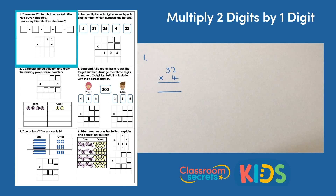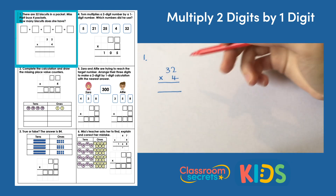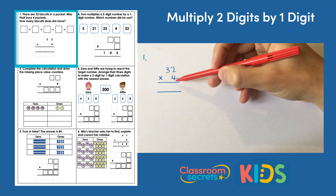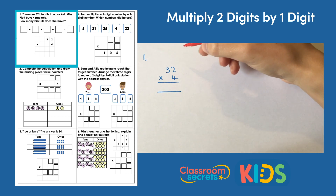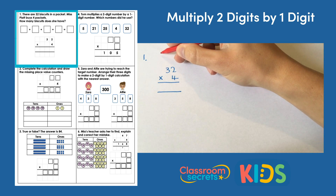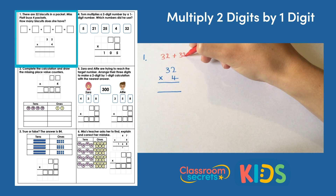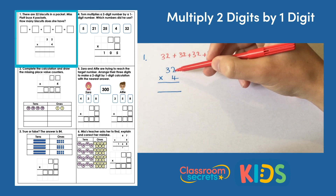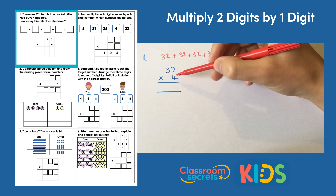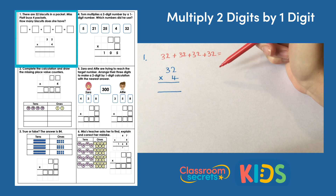Question one. There are 32 biscuits in a packet. Miss Platt buys four packets — how many biscuits does she have? So we're looking to do 32 biscuits multiplied by the four packets. We've got four lots of those 32 biscuits, and the question gives us a repeated addition because that's all multiplication is: 32 add 32 add 32 add 32, which is the same as 32 multiplied by four — four lots of 32.